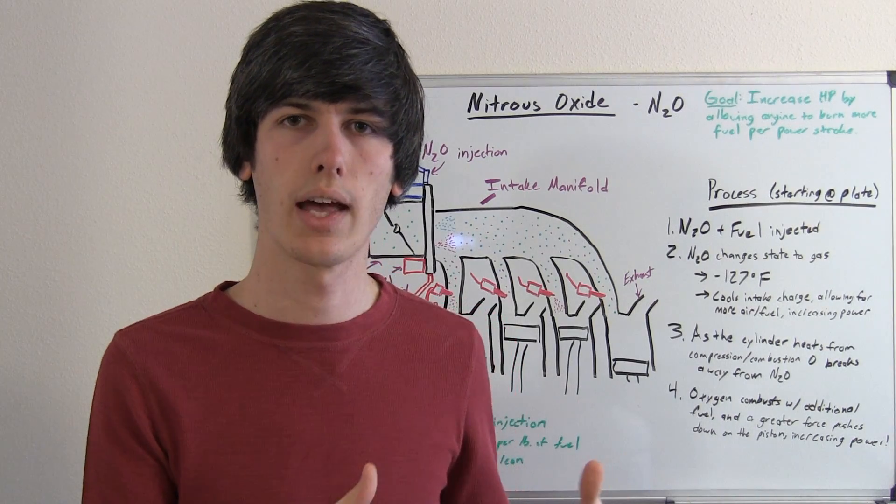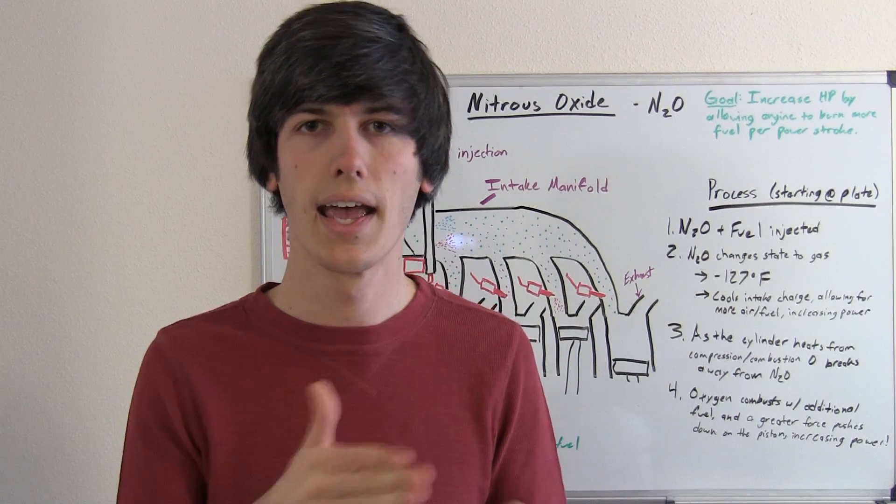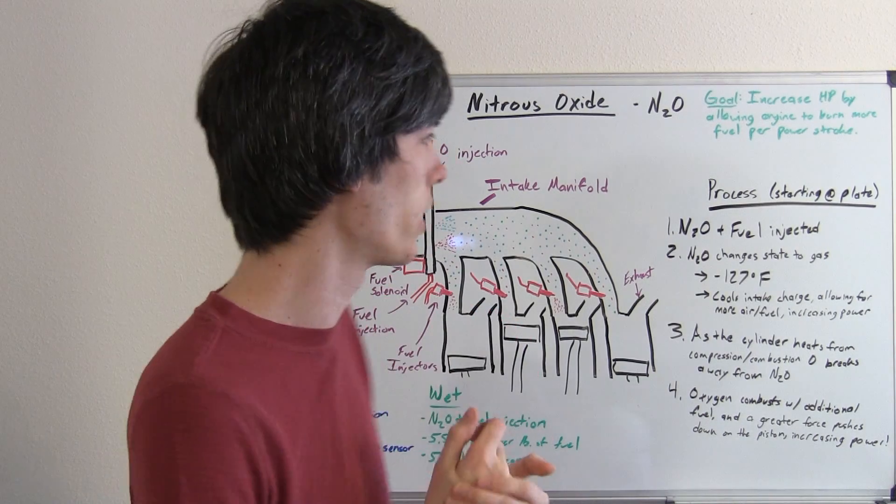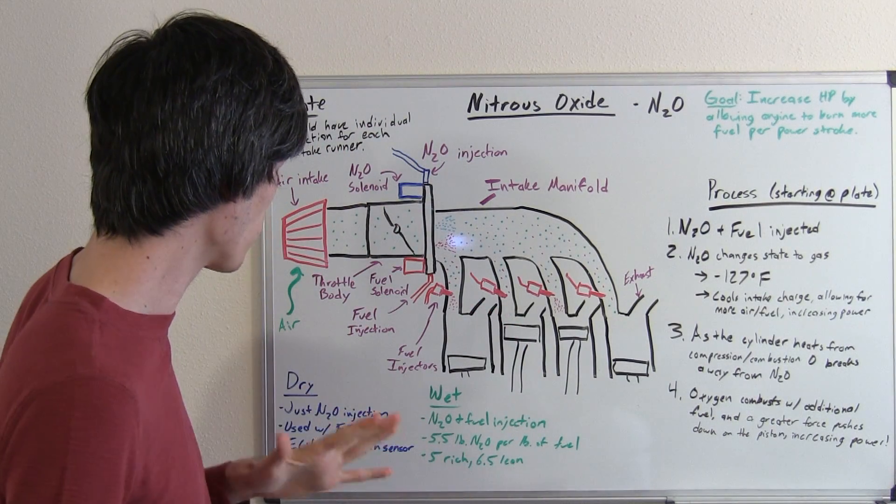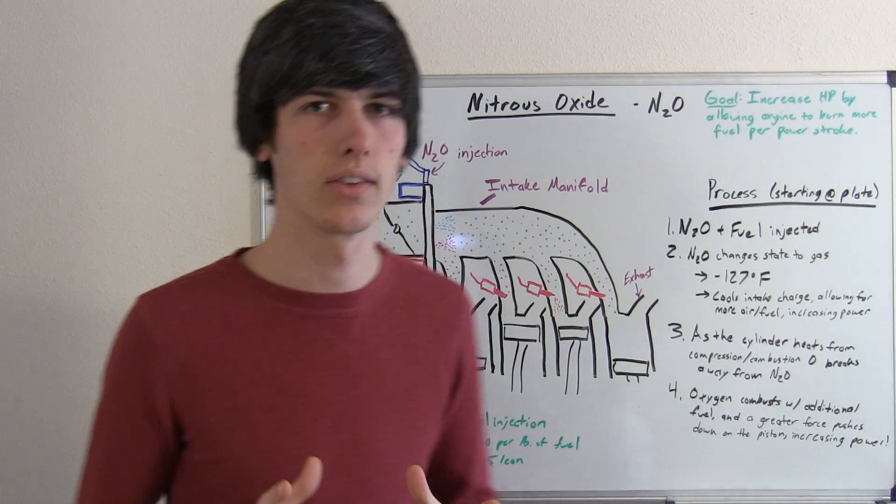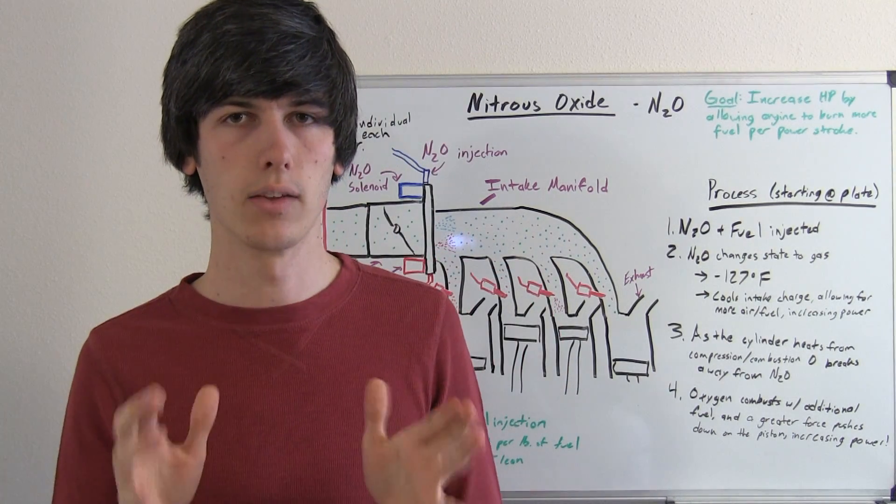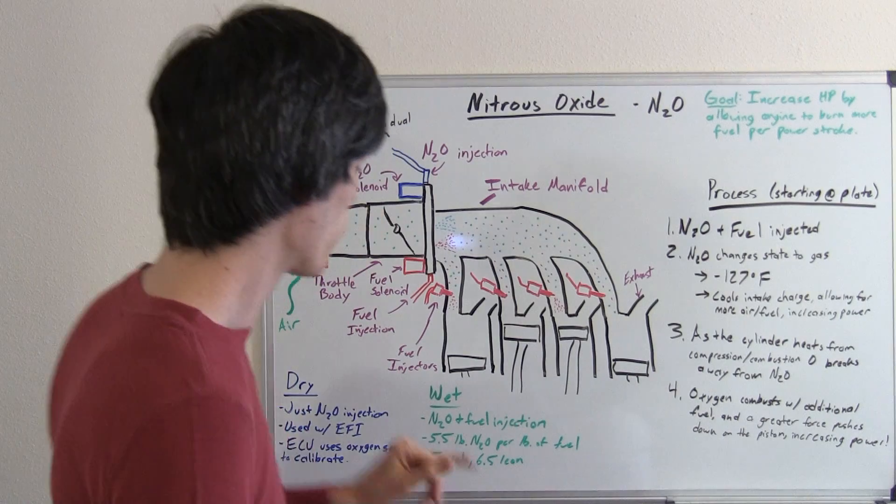And it's going to do that by listening to the oxygen sensor in the exhaust that's saying, hey there's too much oxygen coming through here, you're burning a lean mixture, we need to fix this. So it doesn't react quite as quickly as a wet system where you've already got the correct amount of air and fuel.